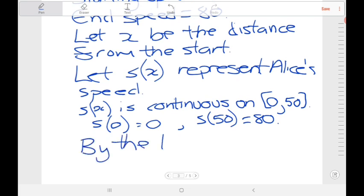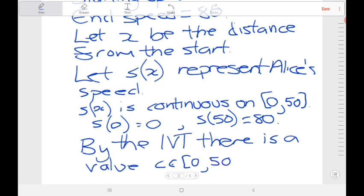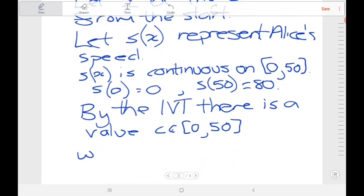By the IVT, there is a value C on this interval where s(C) equals 50 kilometers per hour. Because she started at a speed of 0 and finished at a speed of 80 and it's a continuous function, we know that at some point she hit a speed of 50 kilometers per hour. And that's using the intermediate value theorem.